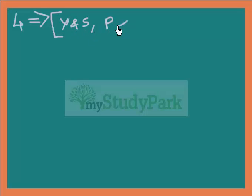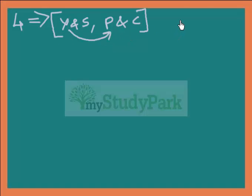Let us try to understand the question in detail. You have four couples going to a party. Two of them are named: you and your spouse, and Pat and Chris. Other than these two couples, you have two more couples going to the party. The question is: if you have shaken hands with Pat, has your spouse shaken hands with Pat as well as with Chris, or with either of them?